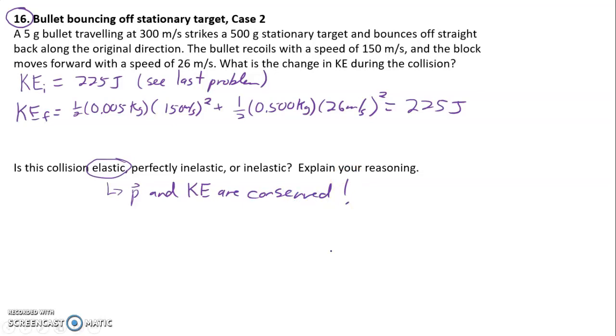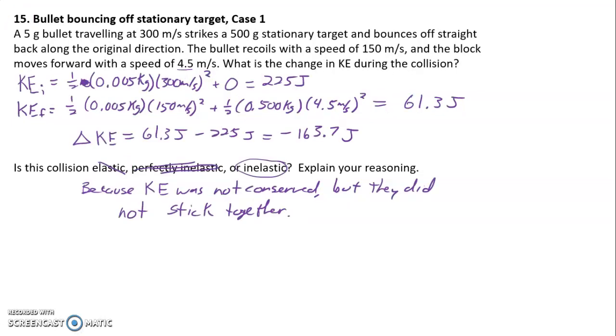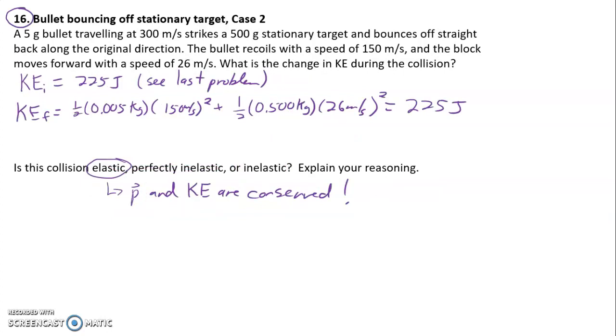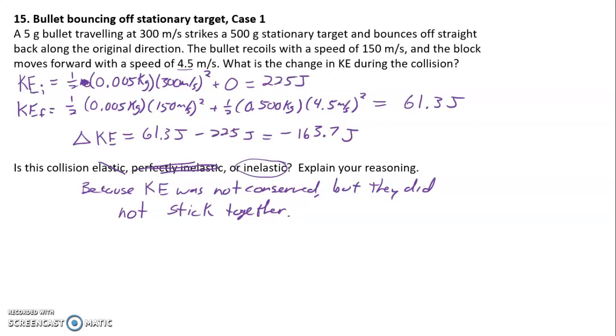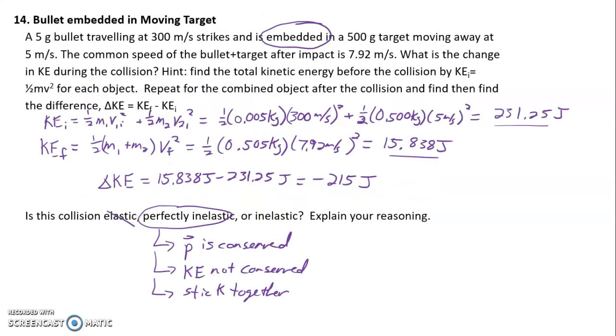And so there you saw where we had 15 and 16, where it was a bullet bouncing off of a stationary target. And remember, just because the bullet bounces off, that does not mean it's elastic. In one of the cases where it bounced off, it was inelastic. And in one of the cases where it bounced off, it was elastic. And the much more likely scenario to happen in real life is inelastic. Inelastic collisions are much more prevalent. And then within the inelastic category, some of the collisions are perfectly inelastic, as we saw here in problem 14.